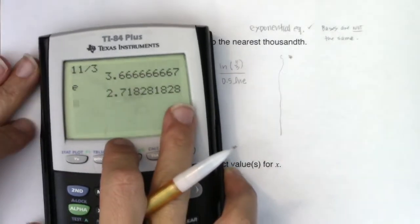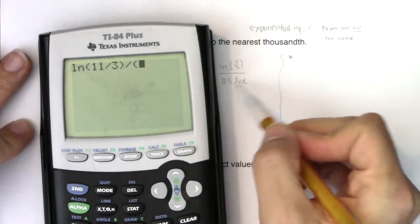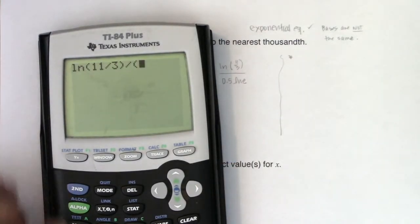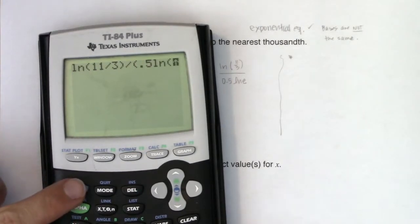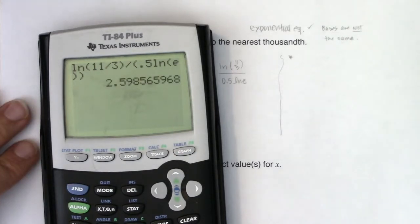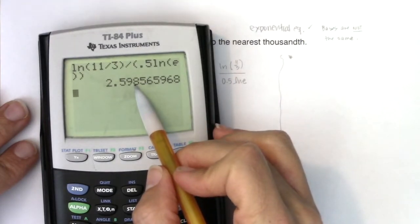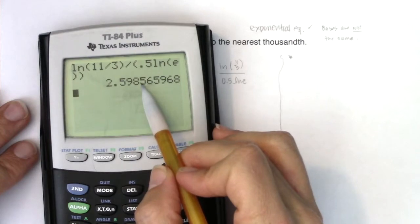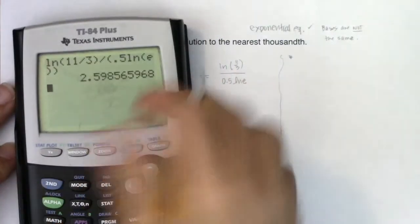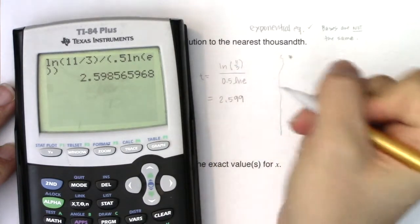So I will do in this numerator, let me clear this out. I'll do ln of 11 thirds. And I want to divide that in parentheses because I want to divide by both of those things by 0.5 ln e. And when I crunch that number, I'm going to get about 2.598. And it says go to the nearest thousandth. That's the thousandth place. If I look one digit to the right, that five is telling me to round up. So this should be 2.599.